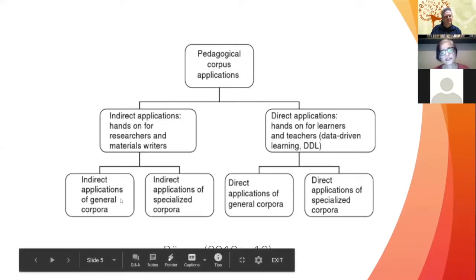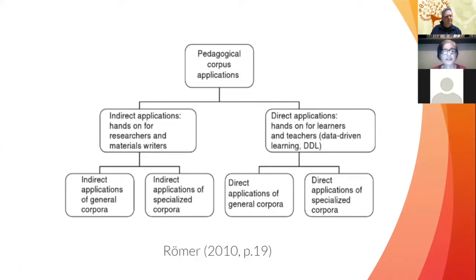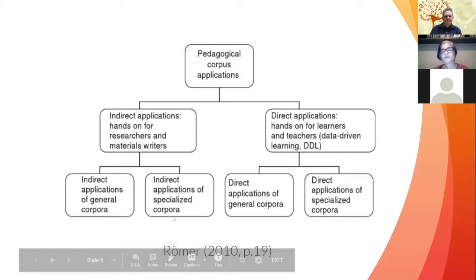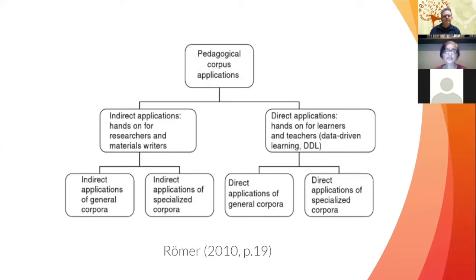On both sides, materials writers and researchers can use general corpora or specialized corpora, and it's the same for teachers and students. General corpora would be something like the British National Corpus or COCA — the Corpus of Contemporary American English — which has a variety of registers and tries to portray language use in general. Specialized corpora, for example, would be the Michigan Corpus of Students' Writings. My own research group works with specialized corpora in areas like chemistry and biology, and Anna Bocorni just presented her work with a specialized corpus in the medical area.